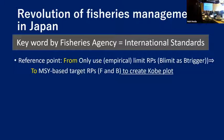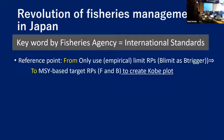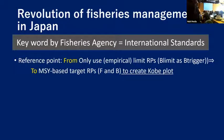The content of past points is on reference points. Traditionally, we have been using only empirical limit reference points — we call it B limit, which is a kind of B trigger. But our fisheries agency asked us to estimate MSY-based target reference points and to create a Kobe plot.